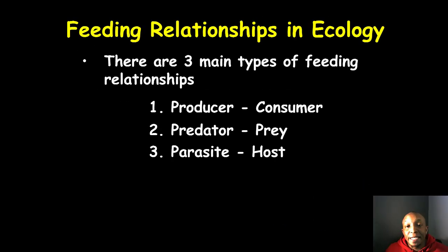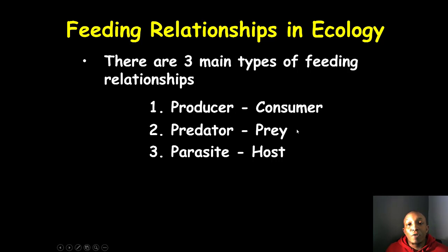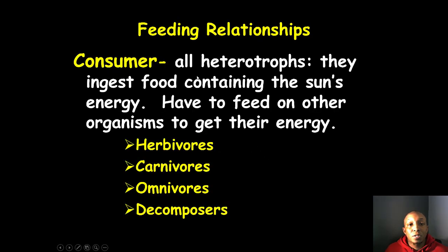Now let's look at feeding relationships in ecology. There are three main types: first, the producer-consumer relationship, such as plants and the organisms that eat them like a cow; second, predator-prey relationships, such as a lion and a gazelle; and third, parasite-host relationships, such as a tick sucking the blood of a human or another host.